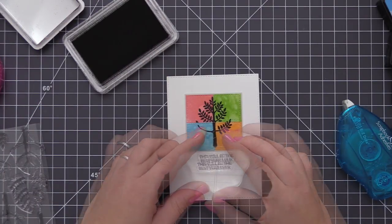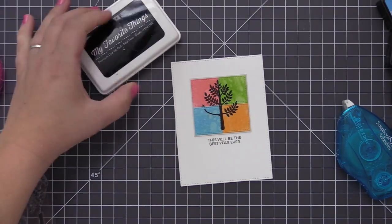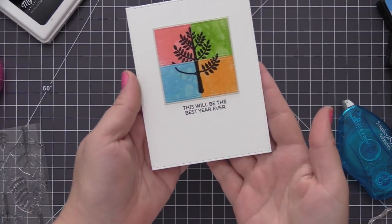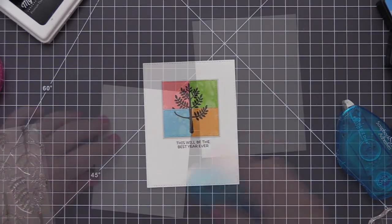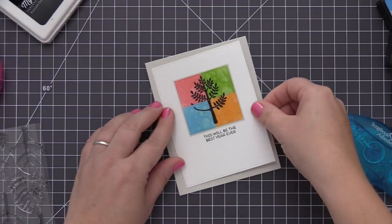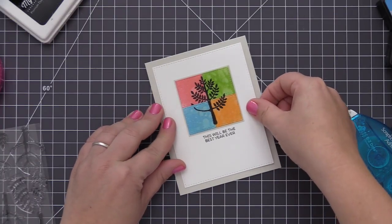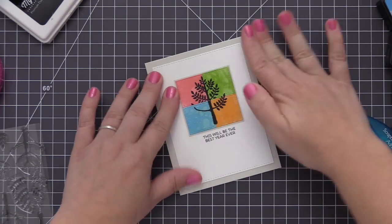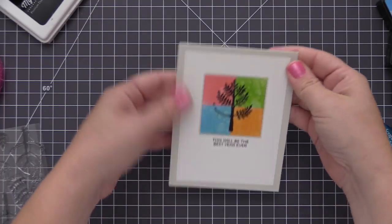I'm just taking some black licorice dye ink and I'm stamping this directly underneath of there and then I'm going to adhere this finished panel to a Grout Gray card base. My card base is four and a quarter by five and a half inches and I've trimmed down this panel with a stitch rectangle from the Blueprints 29 Dynamics die set.